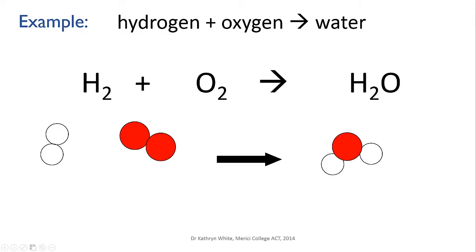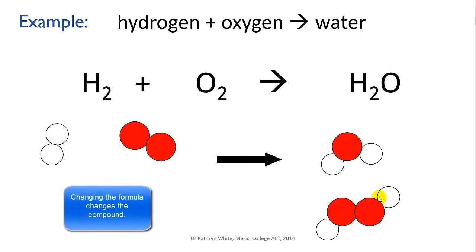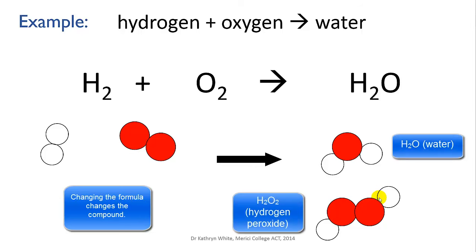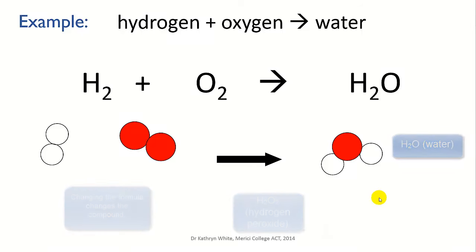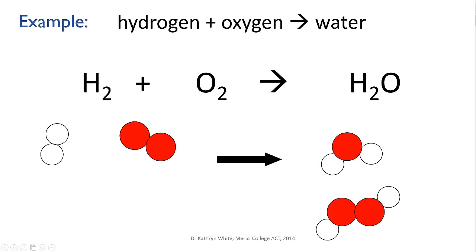There are two ways you might deal with this. One would be to change the formula of water — let's make it H2O2. Then we've got two hydrogens on the left and two on the right, and two oxygens on the left and two on the right. Can we do this? No! The reason we can't is that by changing the formula you completely change the compound. H2O2 is hydrogen peroxide, a highly reactive bleach. So when hydrogen and oxygen react you don't get hydrogen peroxide, you get water. Water is H2O, and so H2O has to stay H2O. Never change the formulae of your compounds.